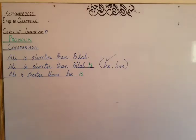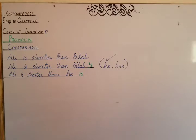That is correct. In this comparison of pronouns we used 'he' because a noun or subjective pronoun is always compared with a subjective pronoun. Between 'him' and 'he,' the subjective pronoun is 'he.' So: Ali is shorter than he. I added 'is' here to make it clear that this is a subjective pronoun.